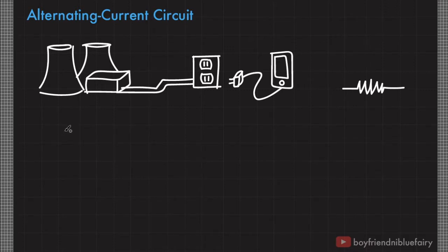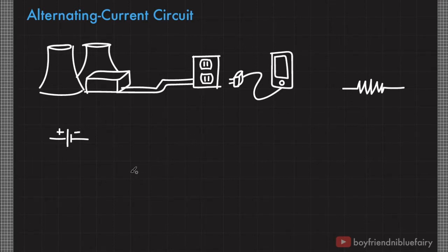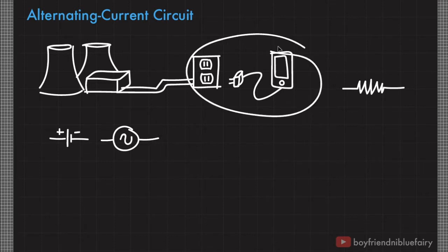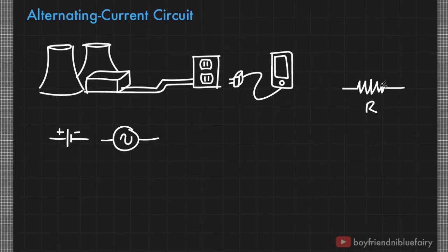From our previous lectures, remember that when we have a constant EMF source, we represent it with two parallel lines. The longer line represents the positive terminal and the shorter line represents the negative terminal. But when we represent alternating current sources, we just represent it with a wave enclosed by a circle. So this is how we represent an AC source in circuit diagrams. We represent this system as a resistor with resistance R and our AC source with this symbol.